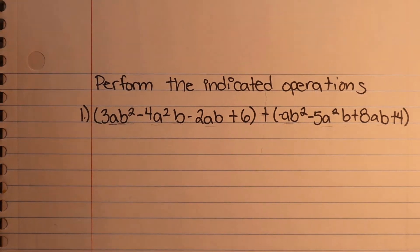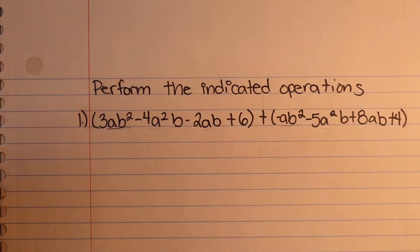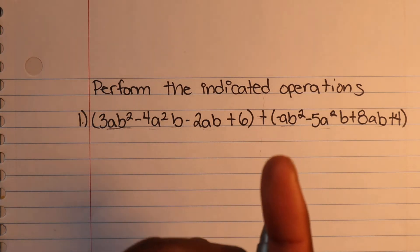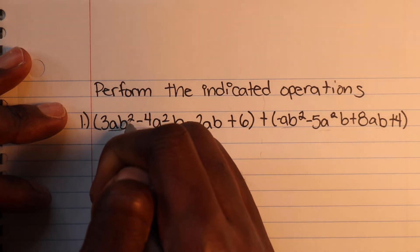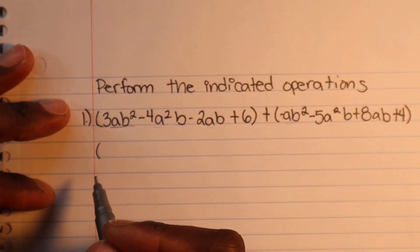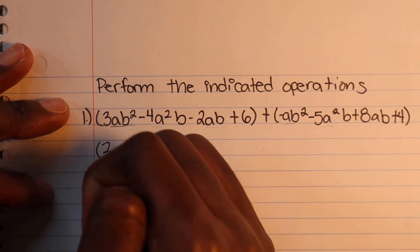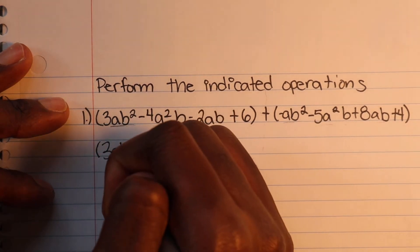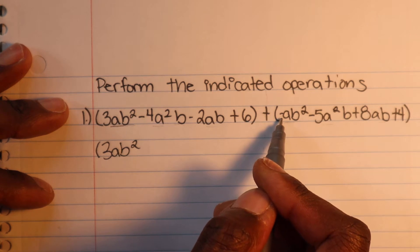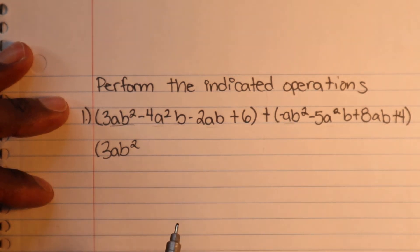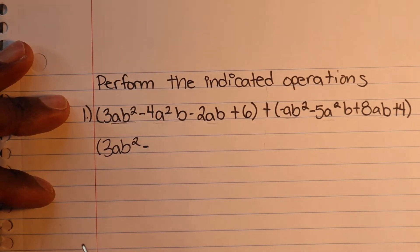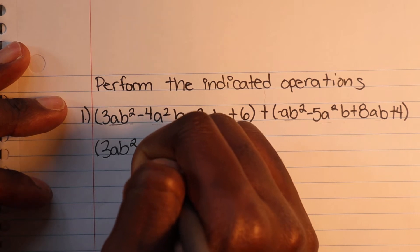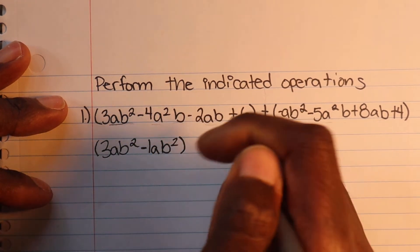Since we've got the like terms matched up — one apple on each side of the wall — all we have to do is perform the indicated operation, which is adding the like terms. So we have 3·AB², and on the other side it's negative AB squared. Remember, that's a negative 1 — there's an imaginary one that isn't written but we should know it's there.